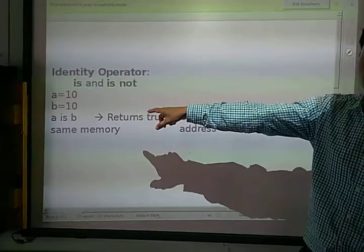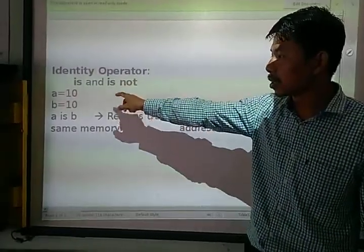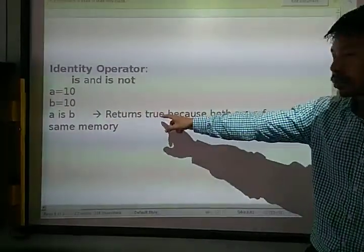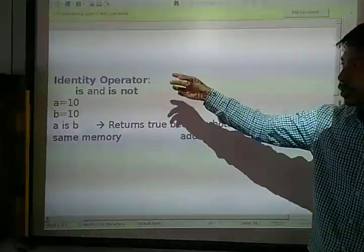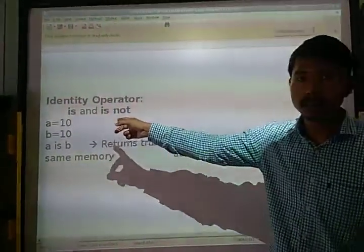And for is not, we will use it like this. Then it will return false because both are true. This is how the is operator works.